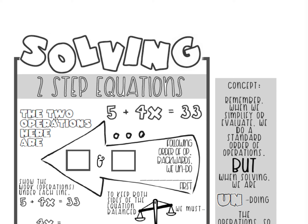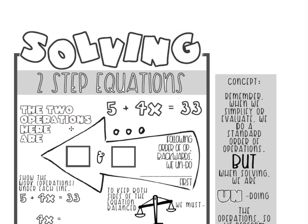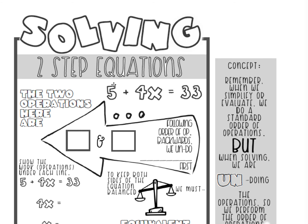Solving two-step equations means that you have two operations in your equation that need to be undone. For example, here's a two-step equation: 5 plus 4x equals 33. Our two operations in this equation are addition and multiplication. The addition you can see here; the multiplication you can't see that sign, but 4x means 4 times x.